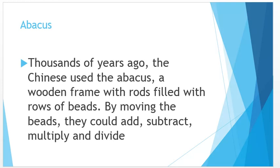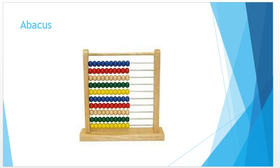By moving the beads, they could add, subtract, multiply and divide. The first device that was formed, that is abacus, and abacus helps us to perform the following arithmetic operations: addition, subtraction, multiplication, and division. This one is the device, this one is the abacus that is having a wooden frame over here and there are the rows, and in each row there are several beads in it. So these beads help the person to count at that time.